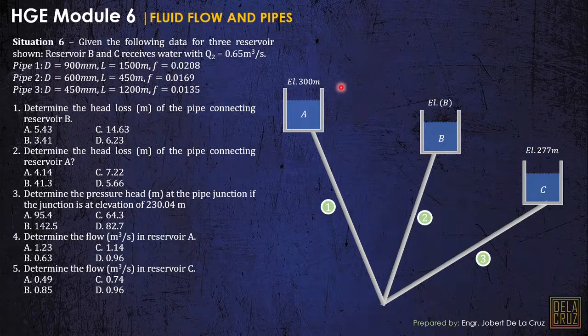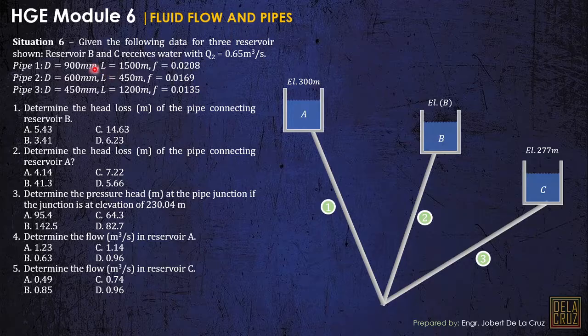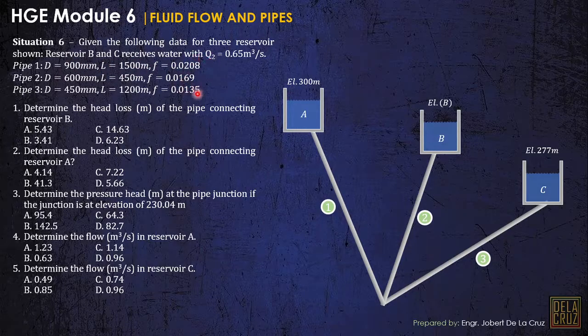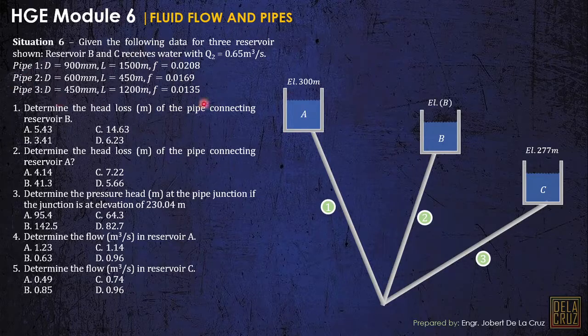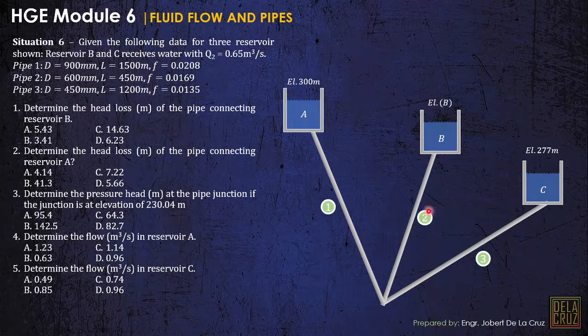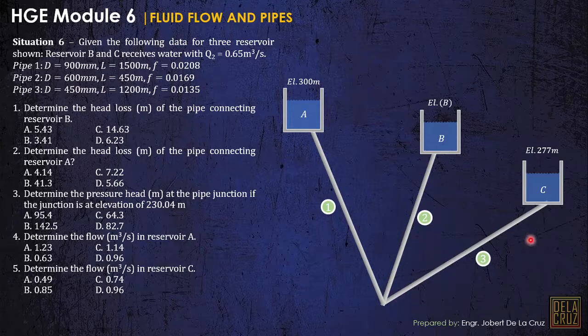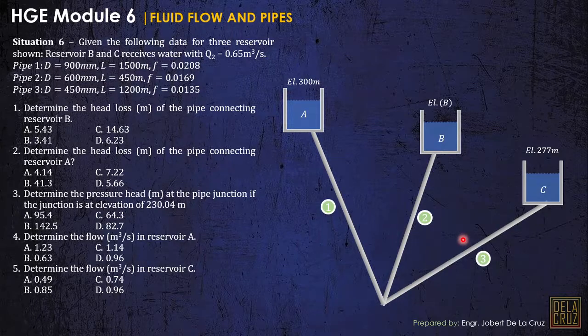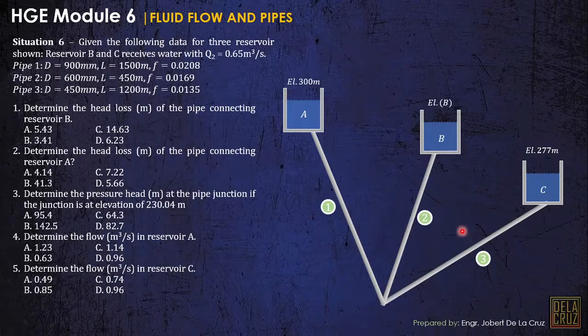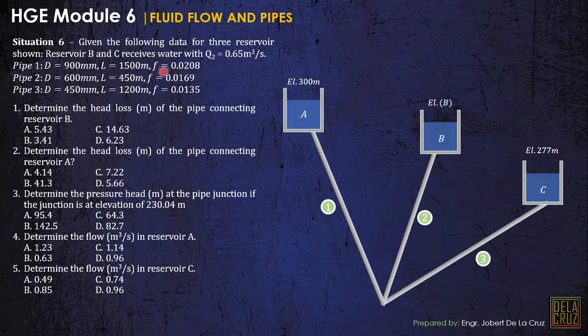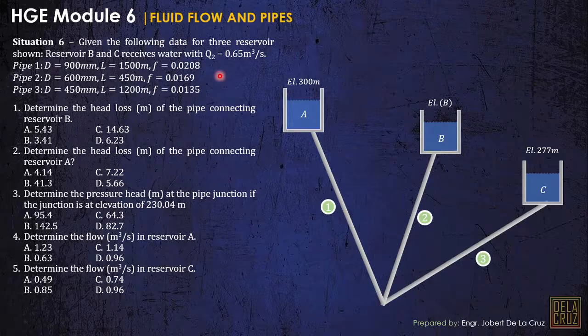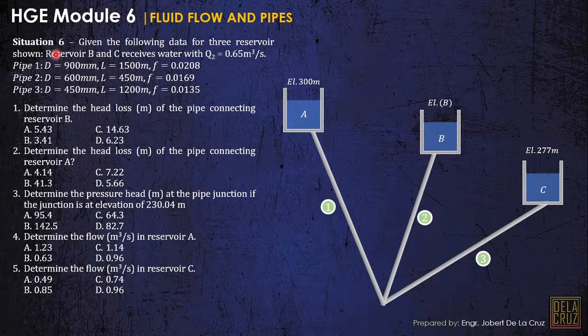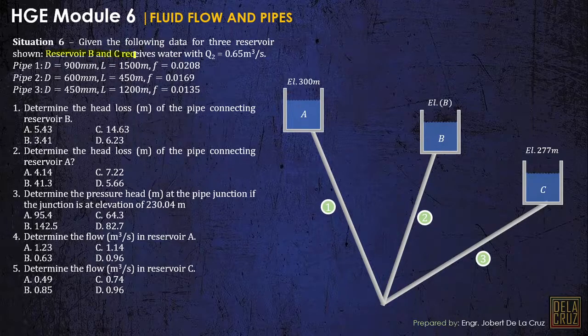So given the following data for three reservoirs shown, reservoir B and C receives water with discharge Q sub 2 equals 0.65 cubic meters per second. And we have the properties of the pipes here: pipe 1, pipe 2, and pipe 3. So the given here is the discharge at pipe 2 denoted as Q sub 2, and it is also stated that reservoir B and C receives water.